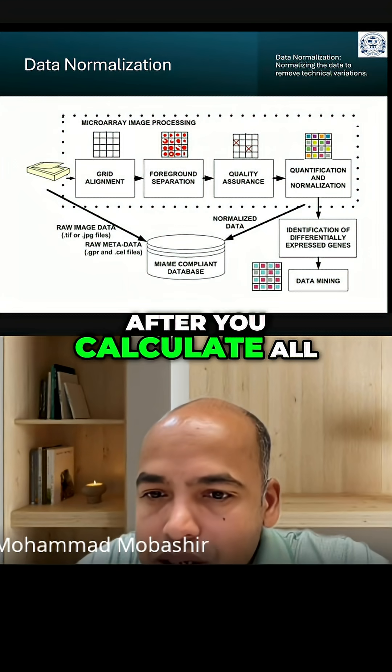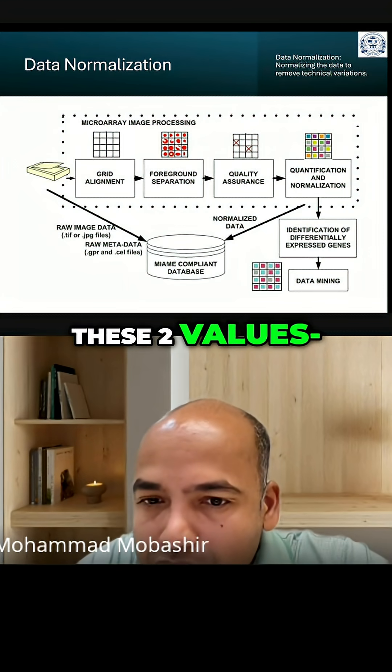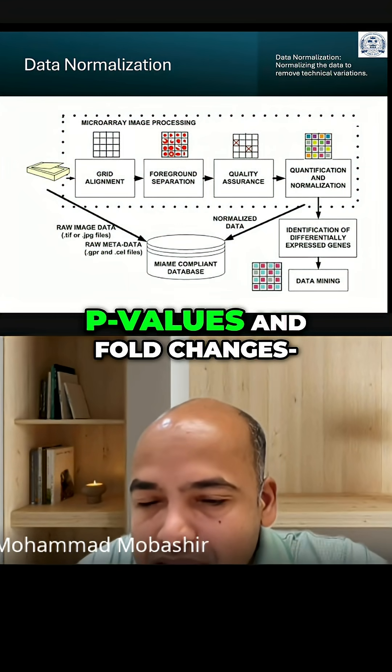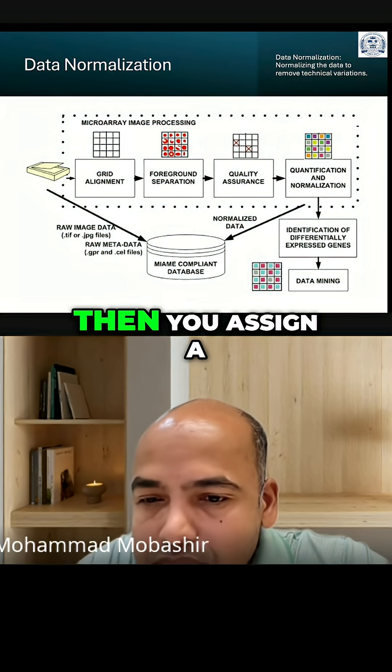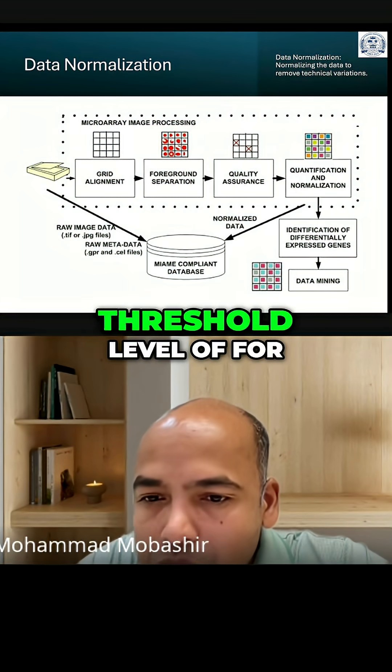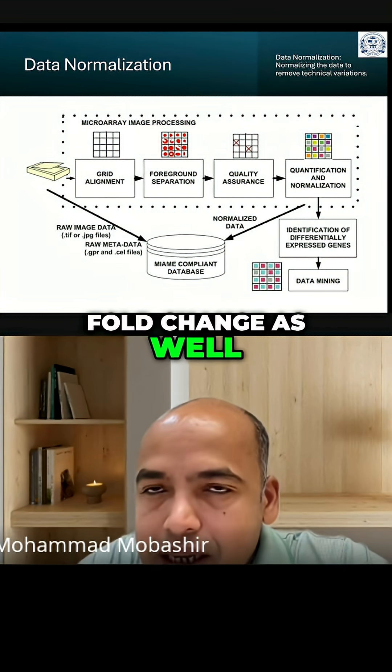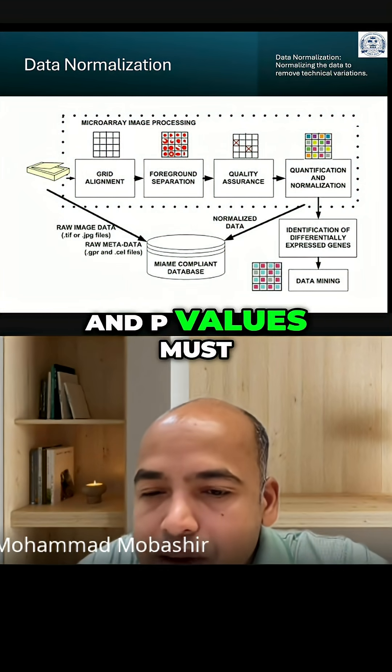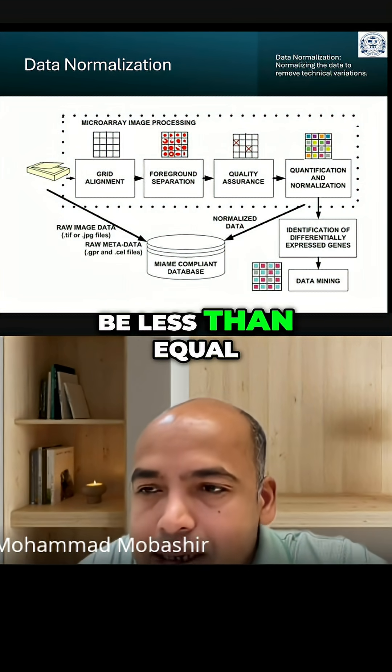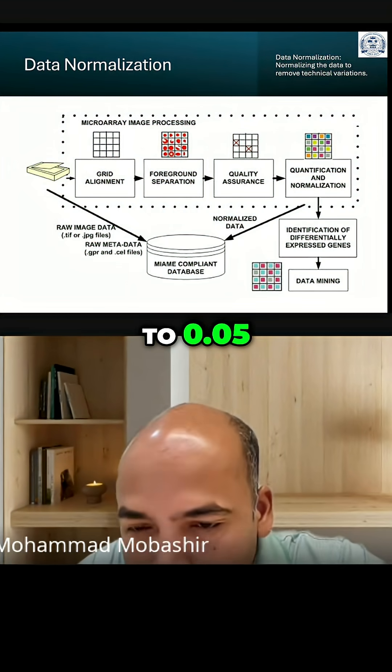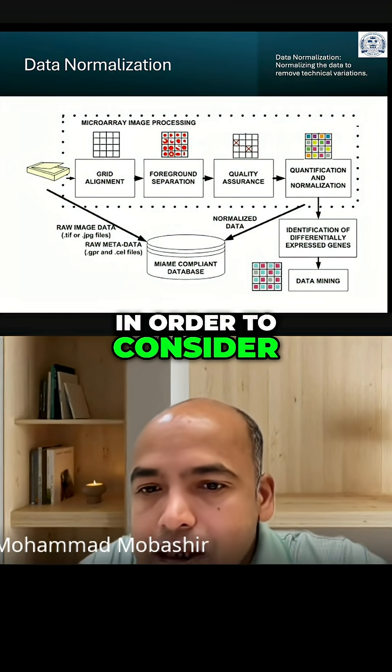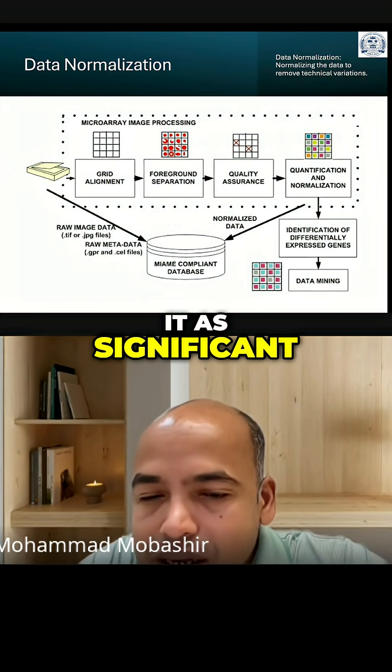After you calculate all these two values, p-values and fold changes, then you assign a threshold level for fold change as well as p-values, and p-values must be less than or equal to 0.05 in order to consider it as significant.